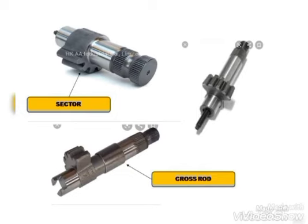You can find the teeth of the sector clearly, and along with that you can find the crossroad. So you can find the sector and crossroad together — the sector with the crossroad.